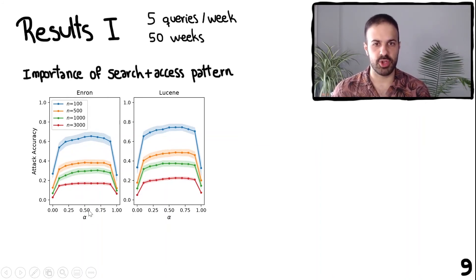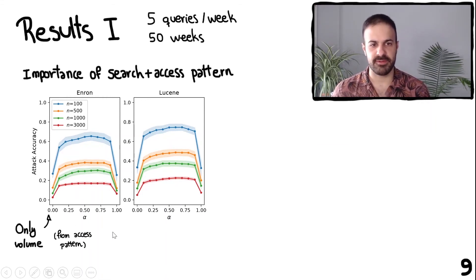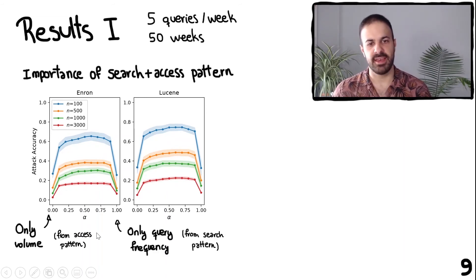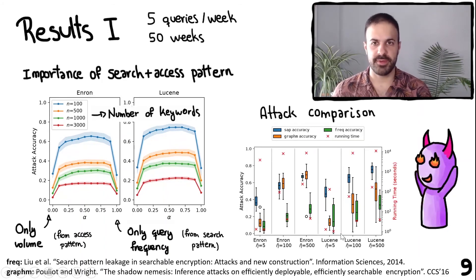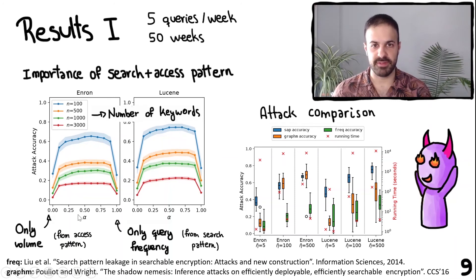The parameter alpha allows us to tune how much weight the attack gives to volume versus frequency information: alpha=0 means only volume information, and alpha=1 means only frequency information. The plots show that by combining volume and frequency information, the attack is far more successful than using either type alone. Each color represents results for a different keyword universe size, and we see it is harder to estimate true keywords when there are more keywords to choose from. Comparing our attack (in blue) with the frequency attack by Liu et al. and the graph matching attack by Paul Liu and Wright, using a keyword universe of 500 keywords and alpha=0.5, our attack outperforms the others and is very close to the graph matching attack on the Enron dataset when the number of queries per week is large.